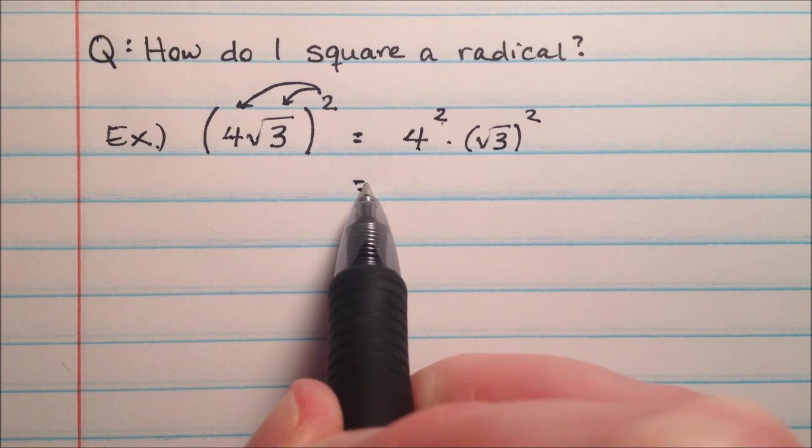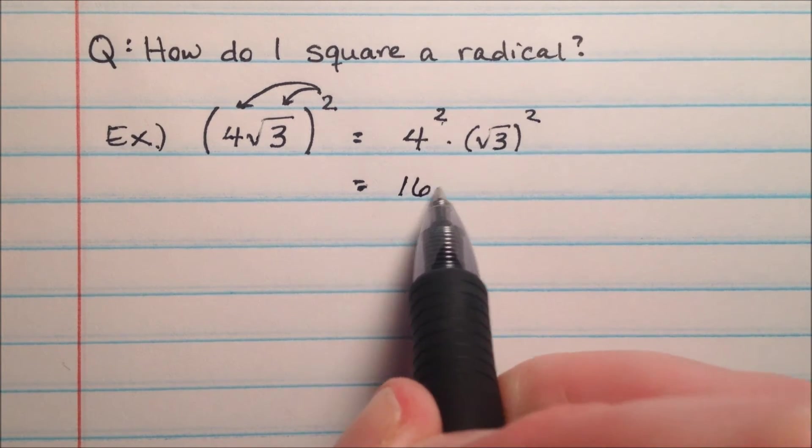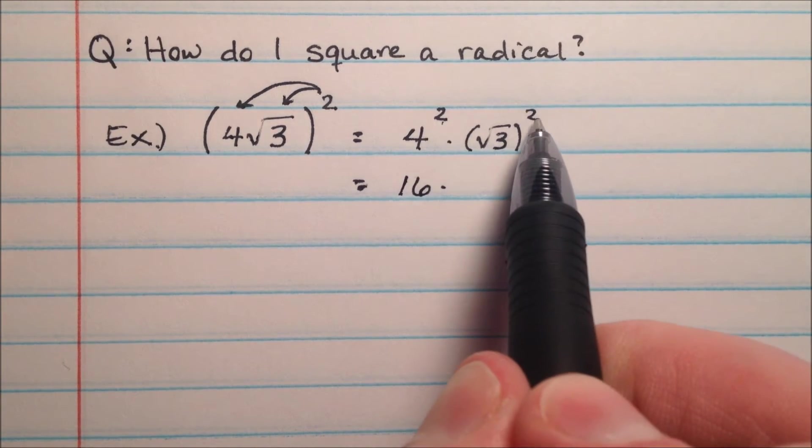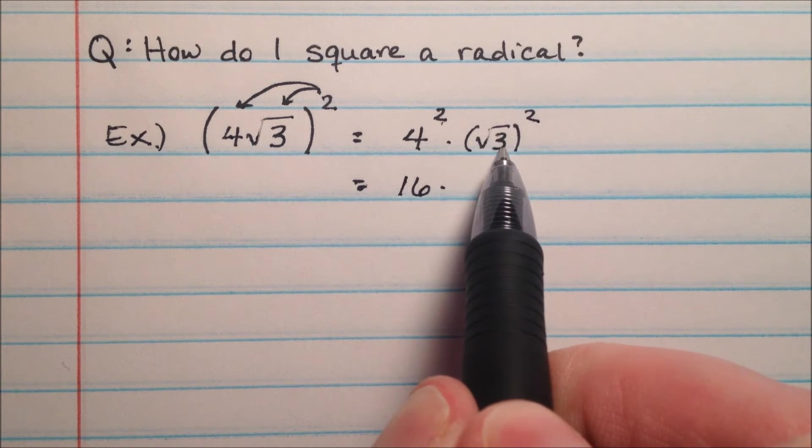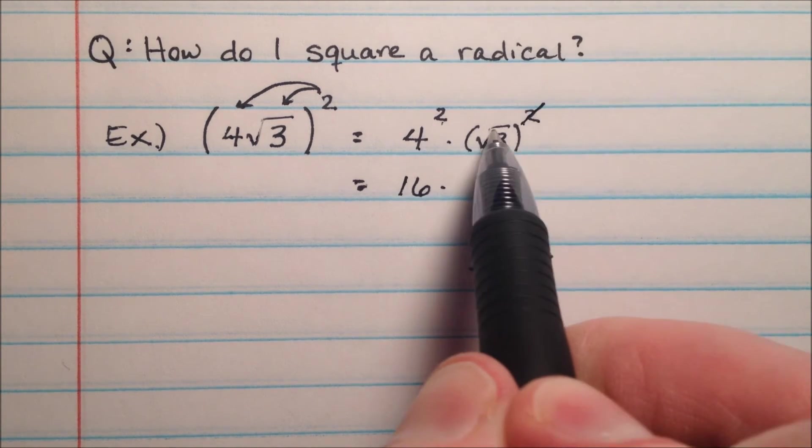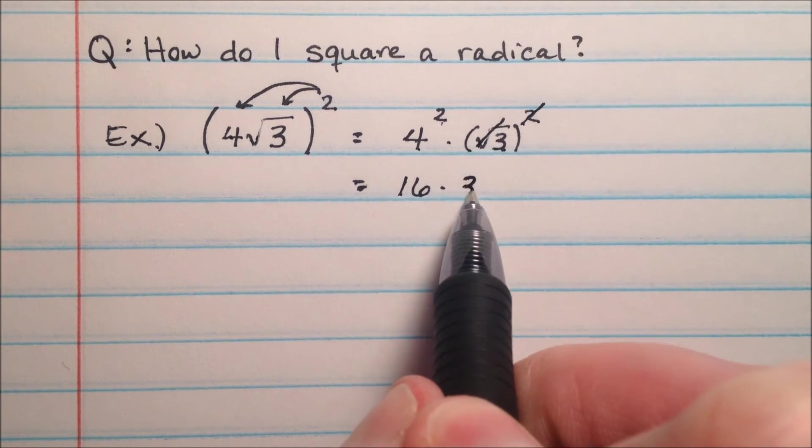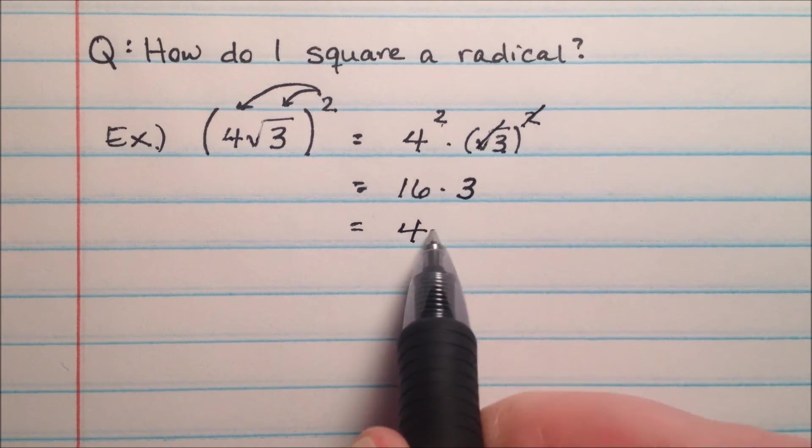Well the 4 squared is no different than 4 times 4, so it's going to be 16. But when we square the square root of 3, the squared and the radical cancel out and we just have a 3, so we end up with 48.